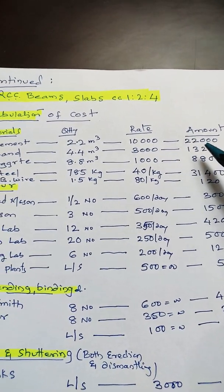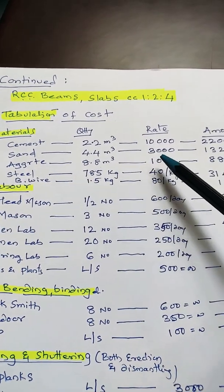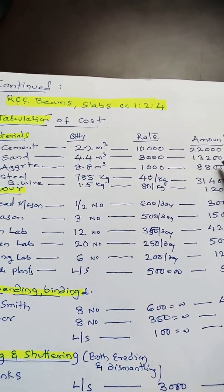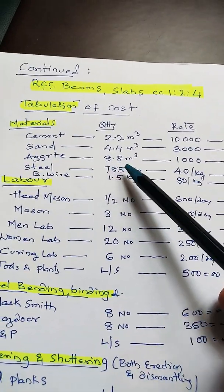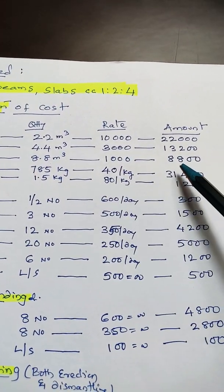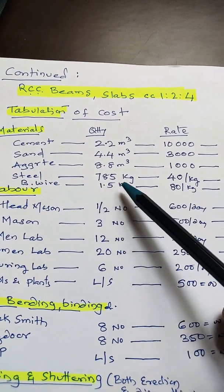Sand 4.4 m³ at roughly 3,000 = 13,200. Aggregate 8.8 m³ at 1,000 rupees per m³ = 8,800. Steel 785 kg at market rate around 40 rupees per kg = 31,400.